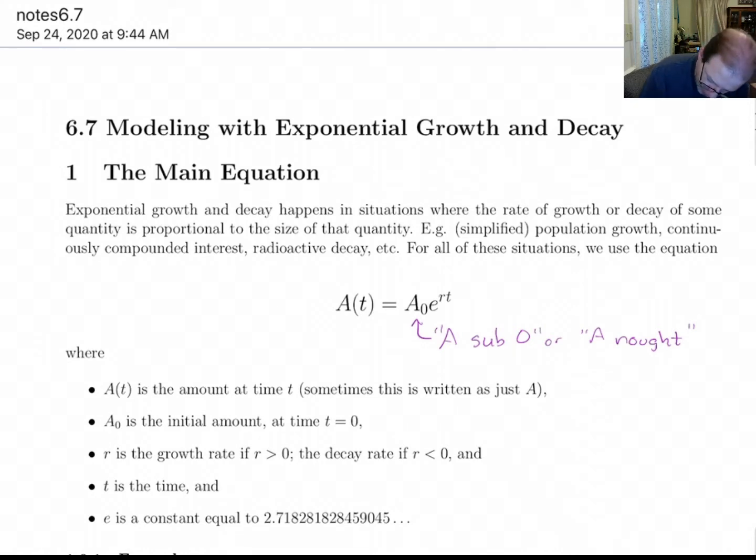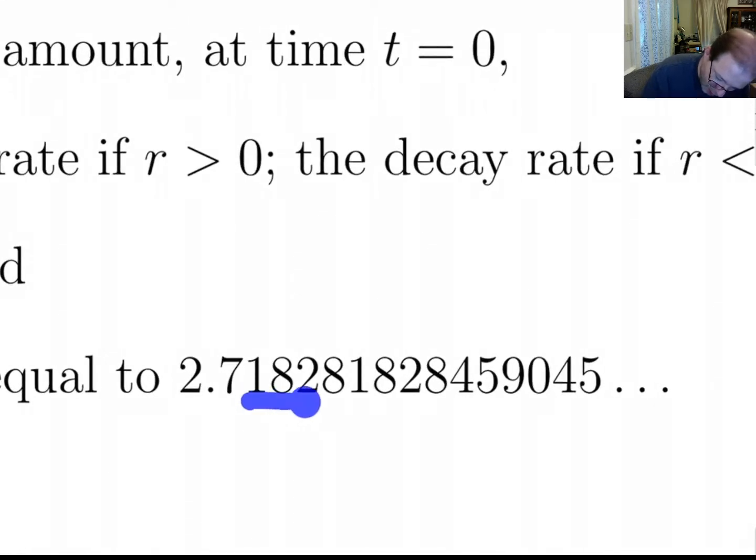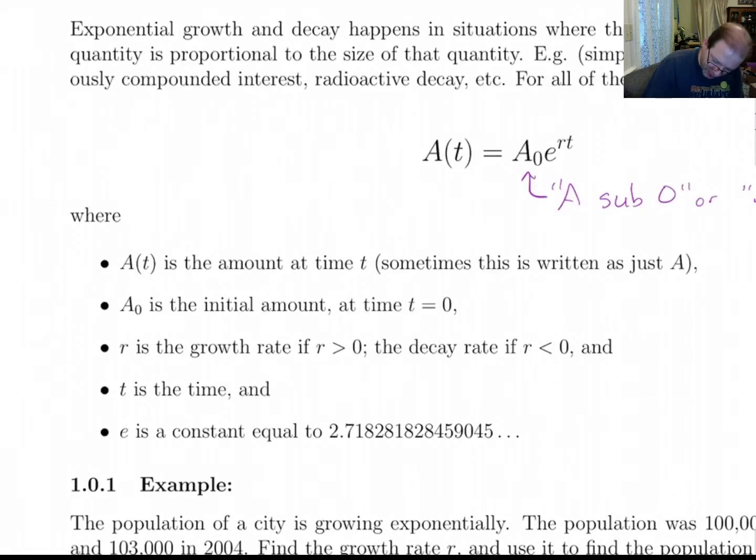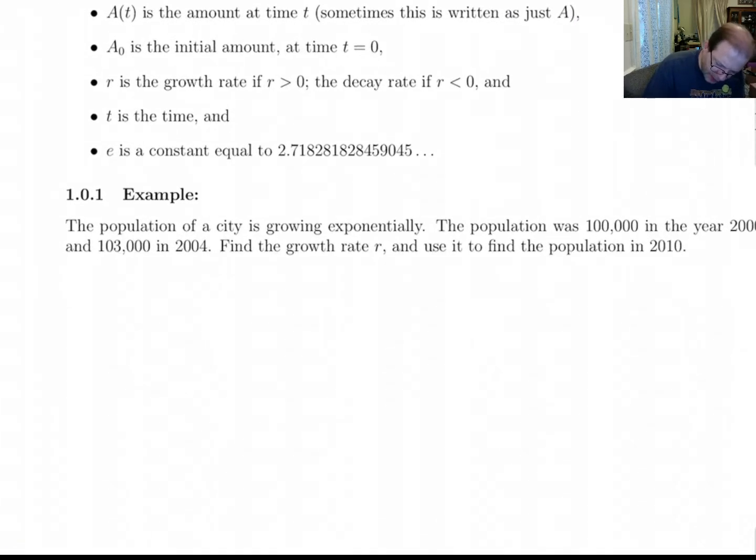And e is the constant, the Euler number, 2.71828, 1828, 45, 90, 45. In reality if you know 2.718 you're good. Your calculator can supply the rest of that. So let's look at an example. The population of a city is growing exponentially. The population was 100,000 in the year 2000 and 103,000 in 2004.